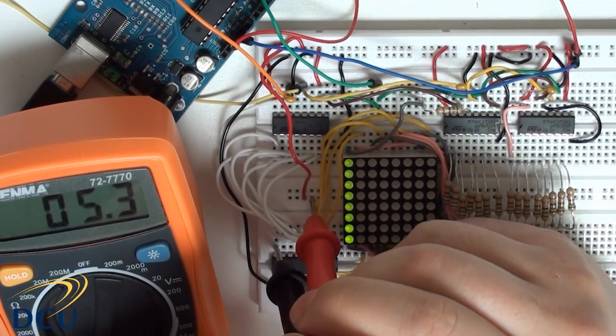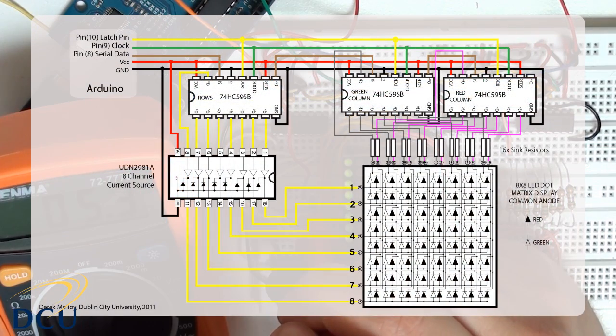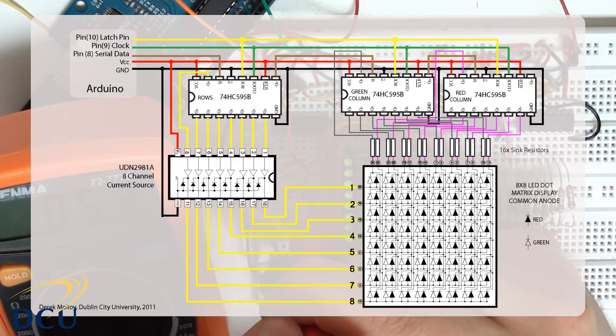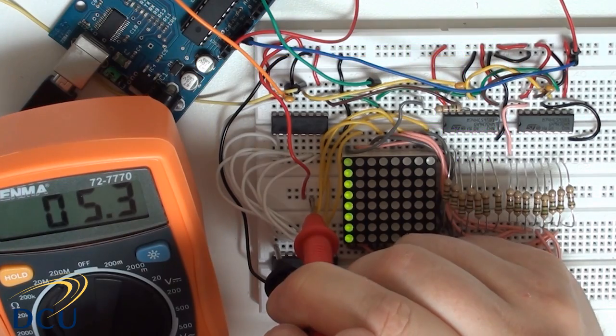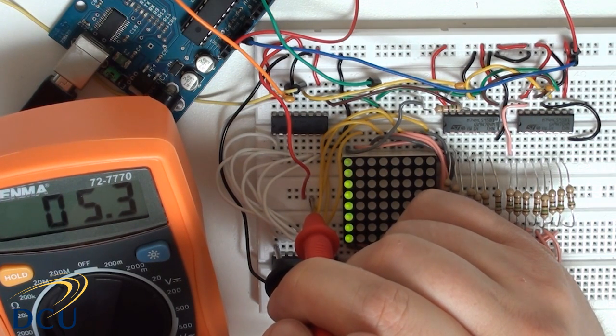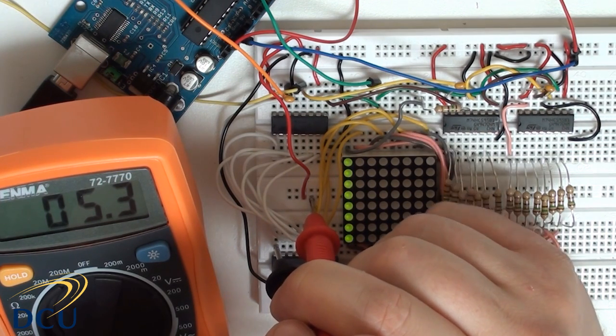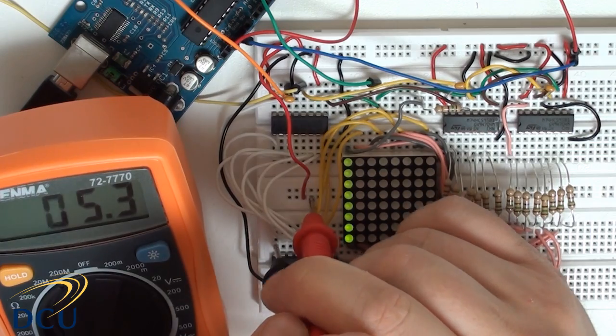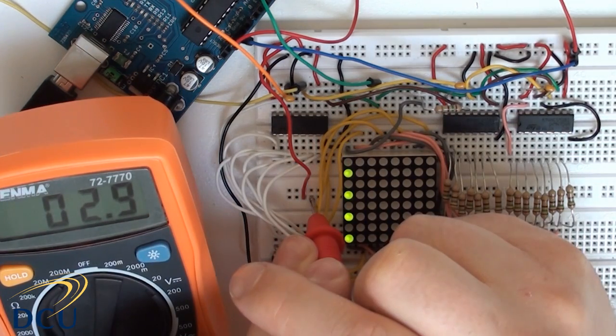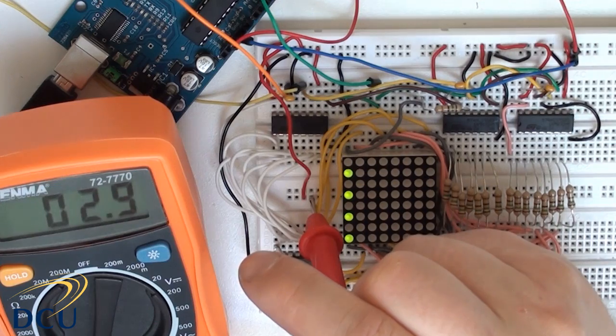Now we need to check the current that we're drawing through the UDN2981A. To do this I've broken the VSS to VCC connection of my current source and I'm measuring the total current being drawn by the IC. Here you can see that we're drawing 5.3mA. This is coming about because we're lighting just a single LED on the column. Remember we're only checking one row at a time. If we were to change this circuit so that we light only every second row, you see the average current is now down to 2.9mA. That just gives an indication of the averaging effect.